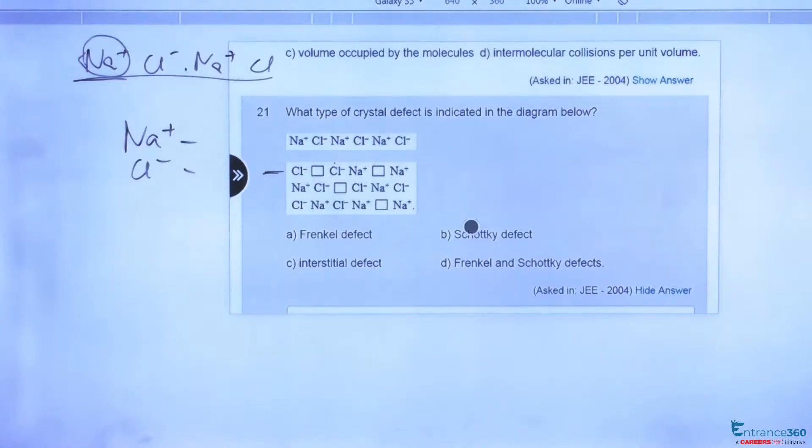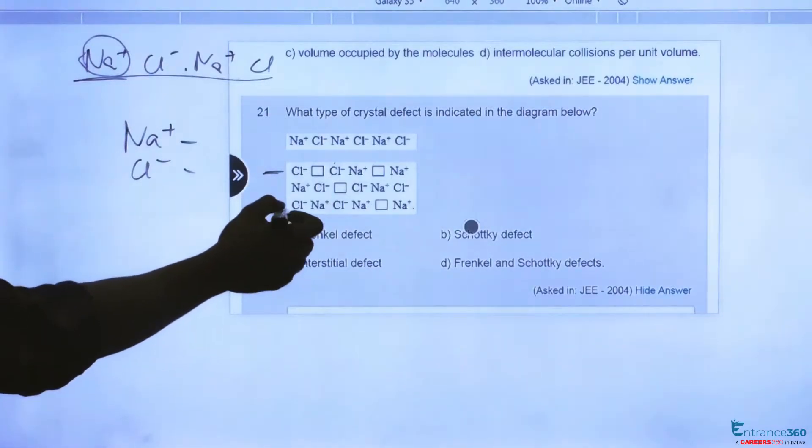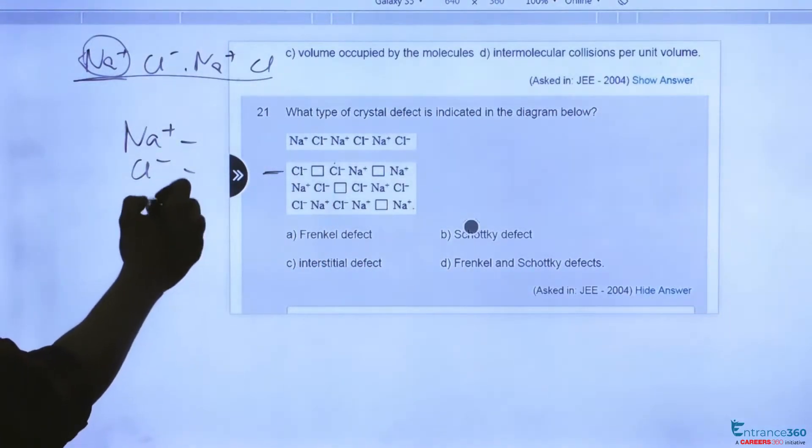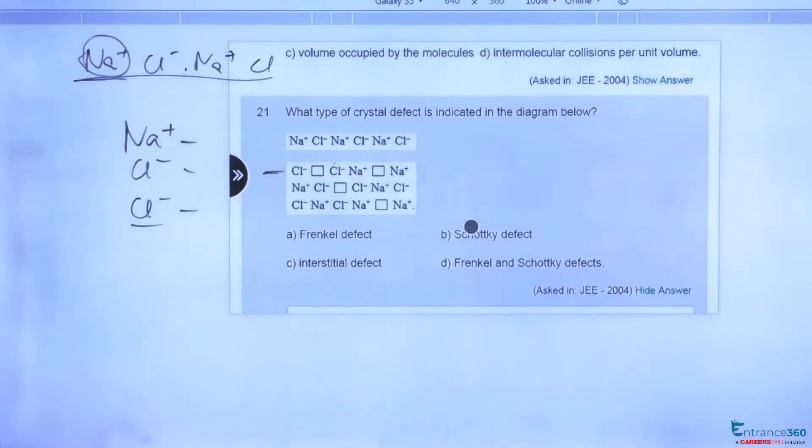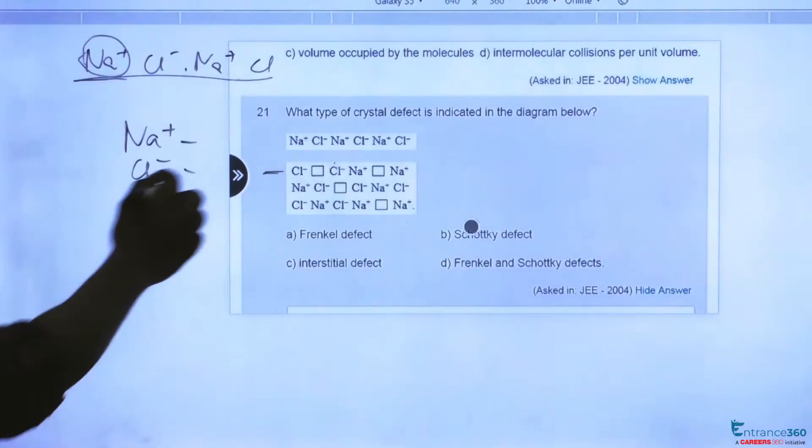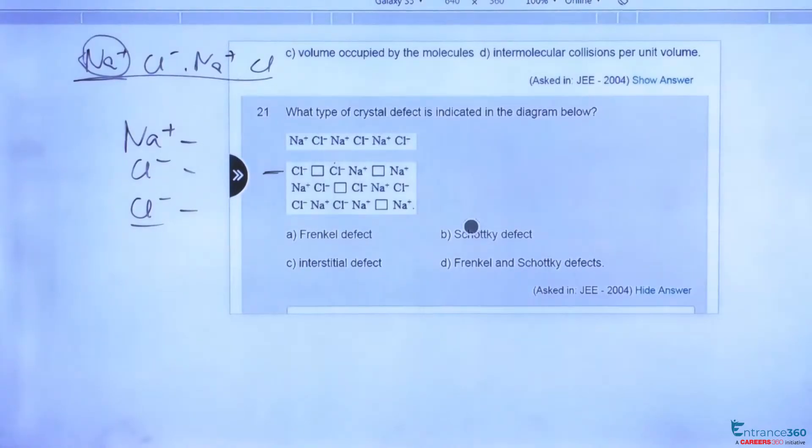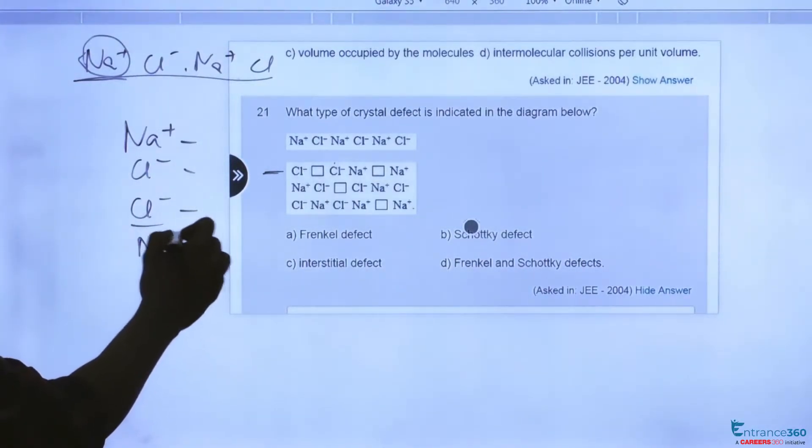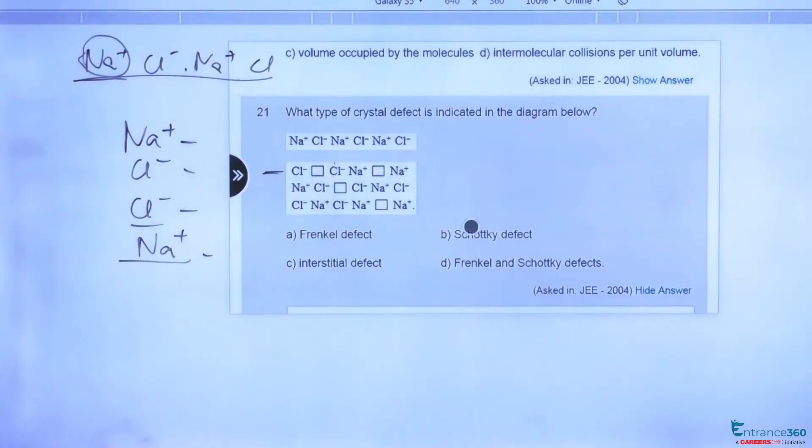In the lower row we can see that there is another Cl minus atom missing, and in the middle of these two Cl minus atoms there is one sodium plus ion missing.